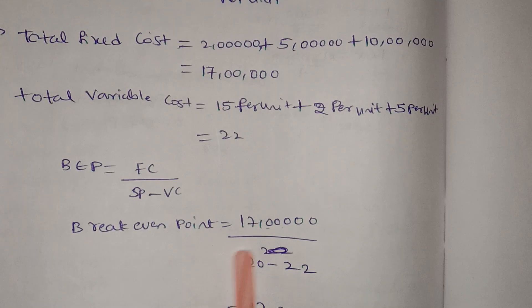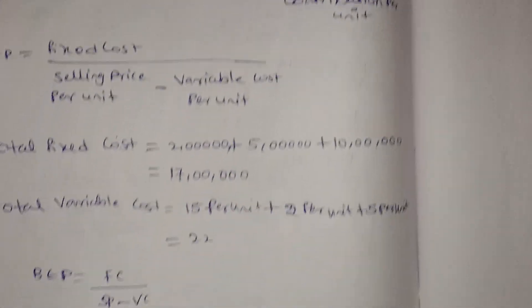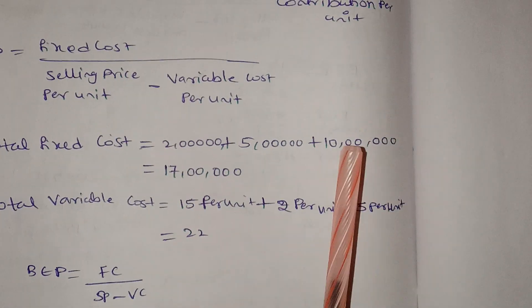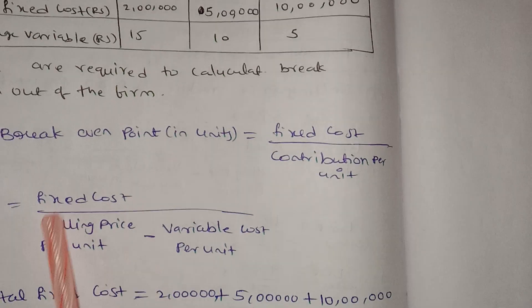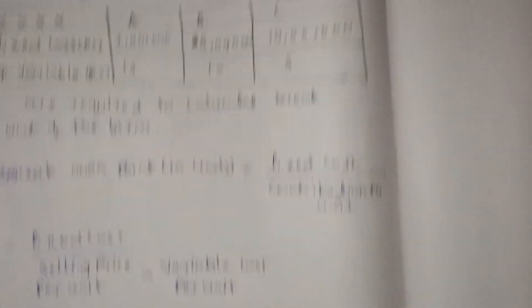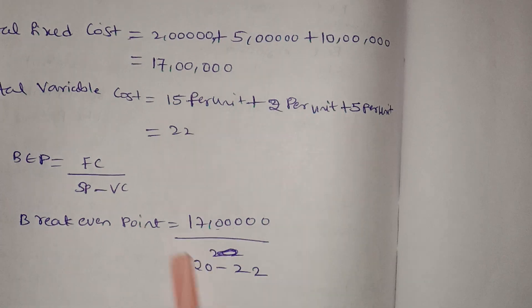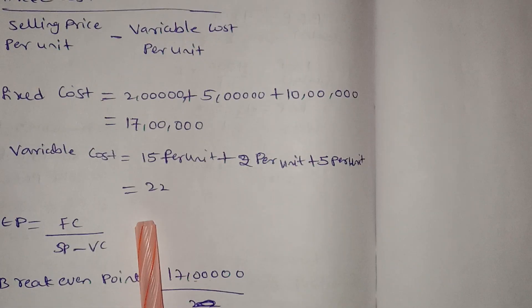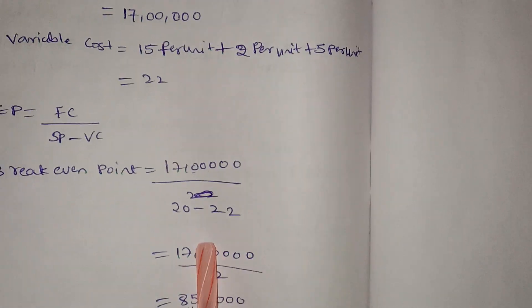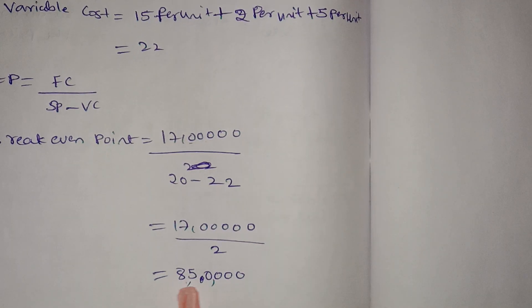The fixed cost is 17 lakhs. The selling price is Rs20 per unit, so 20 minus the variable cost of 22 gives us a contribution of minus 2. So 17 lakhs divided by 2 equals 8.5 lakhs — 8 lakhs 50 thousand.